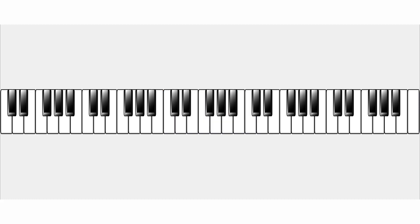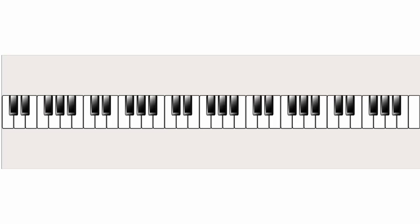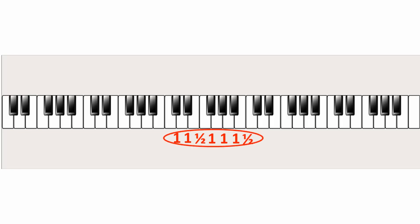Let's look at the intervals between consecutive notes in the C major scale. From C to D is a whole tone; D to E, a whole tone; E to F, a halftone; F to G, a whole tone; G to A, a whole tone; A to B, a whole tone; and finally B to C, a halftone. So the structure for the C major scale is: whole tone, whole tone, halftone, whole tone, whole tone, whole tone, halftone. This same structure applies to all major scales, not only C major.